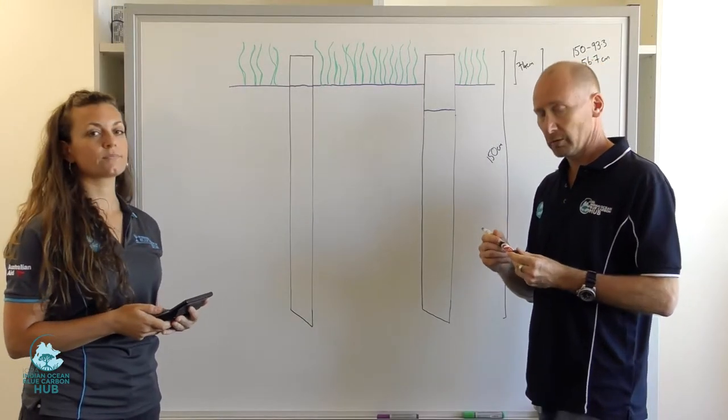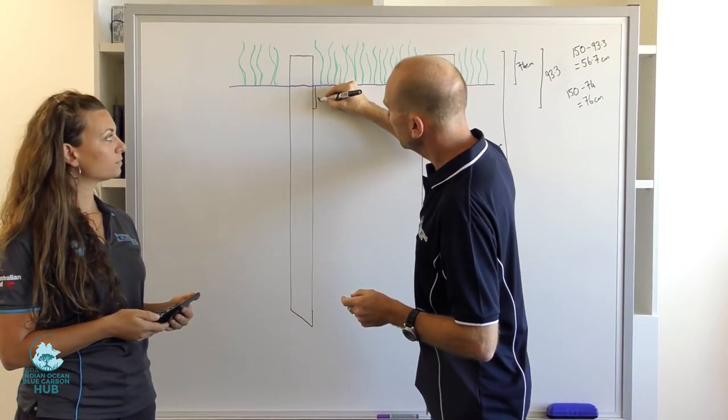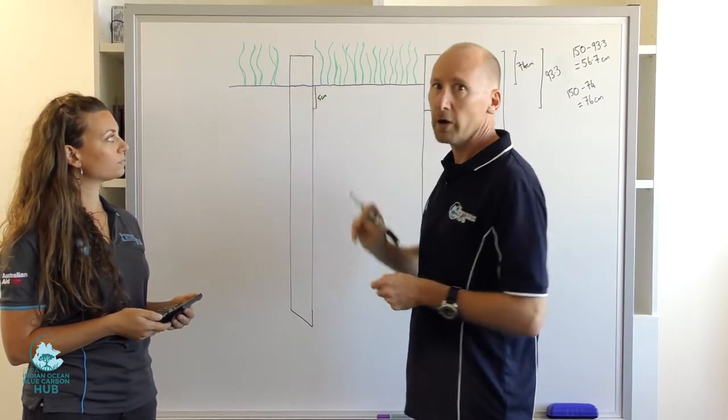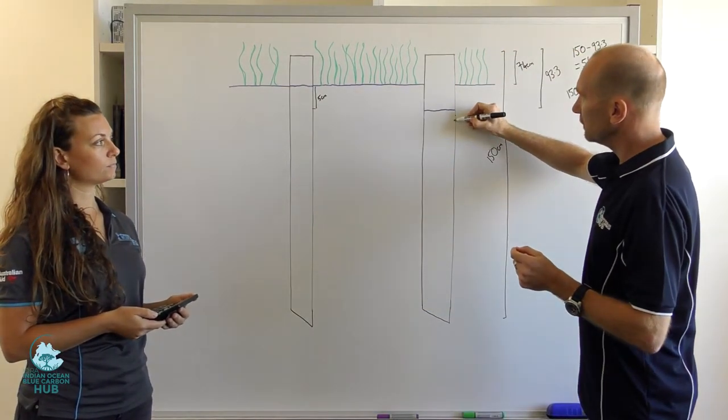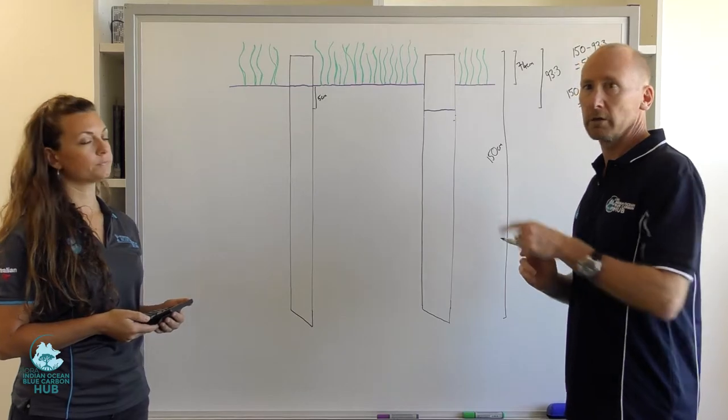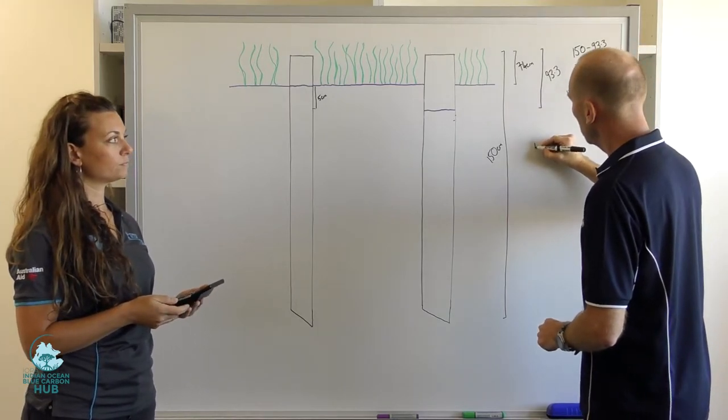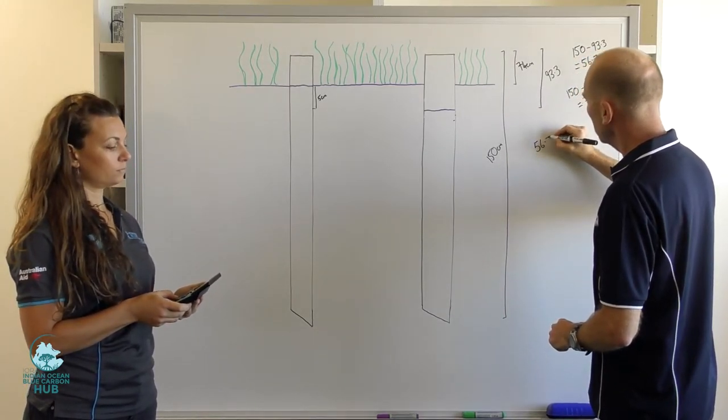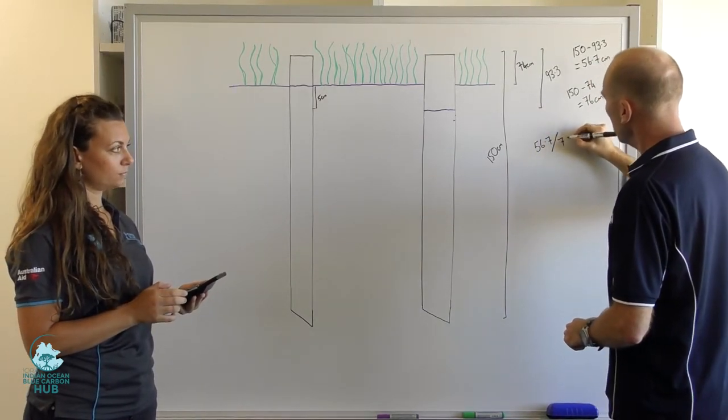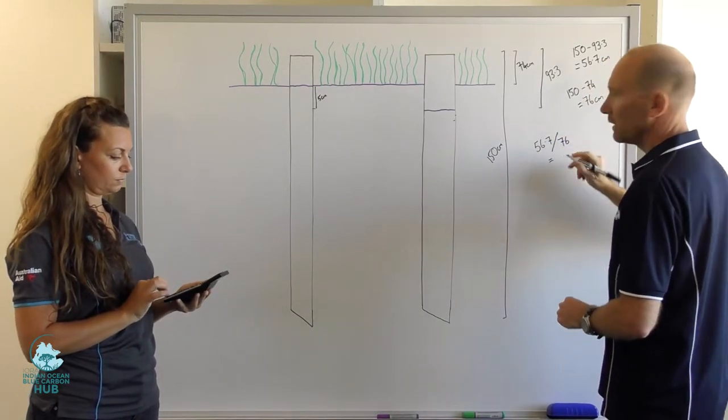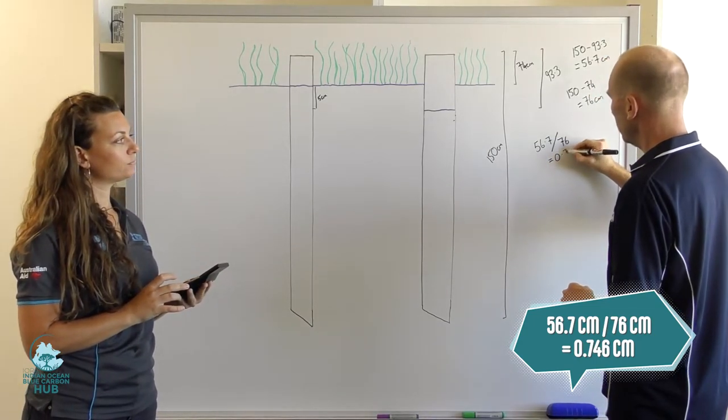So in a situation where you want to be sampling in the lab what is effectively equivalent to 5 centimeters of an uncompressed core, you need to calculate what the equivalent length of core you should slice for the compressed core. So to do that, we take our outside measurement divided by our inside measurement, which is 0.746.